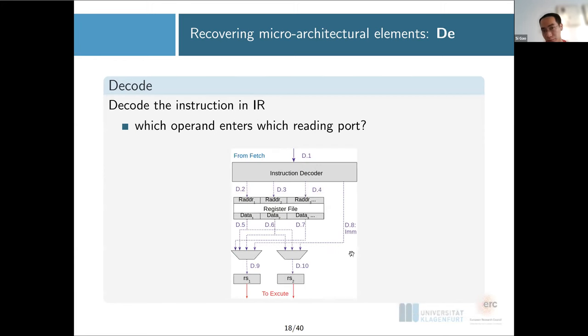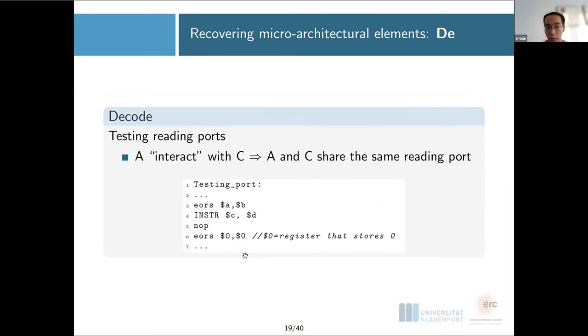For the decode stage, we decode the instruction and create all the control signals. Everything before the register file is not really data-dependent; they are perhaps branch or instruction dependent, but that's not what we are looking for in our leakage analysis. So everything after the register file we do care about. Then we care about: for each instruction, which operand goes to which reading port? And we're going to test it with some customized code here. With this code, I send A and B through this XOR, and then with the target instruction C and D. What I'm testing here is whether I can observe an interaction between A and C. If so, A and C share the same reading port. Otherwise, maybe I can observe B and C.